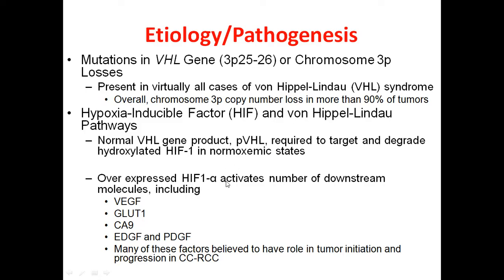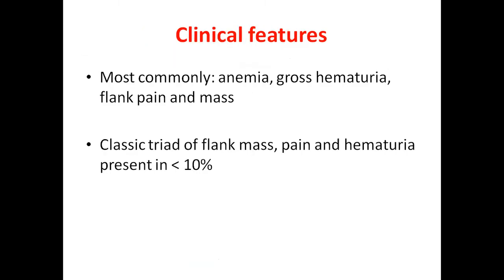When HIF-1 is overexpressed, it activates a lot of secondary molecular messengers downstream, including VEGF, GLUT1, CA9, EGF, and PDGF. These activate a molecular chain of events that ultimately leads to the initiation of the clear cell renal cell tumor.